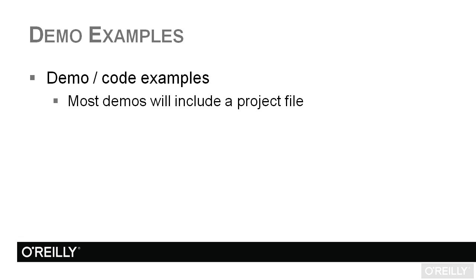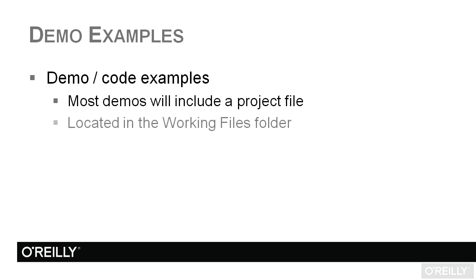If you see me coding something on the screen in Visual Studio, unless it's just something very, very simple — just one or two lines of code — there will be a demo code example solution project file, whatever you want to call it, out there in the working files folder. Just go look for the chapter or section of the course you're working in, and you'll see the project file.